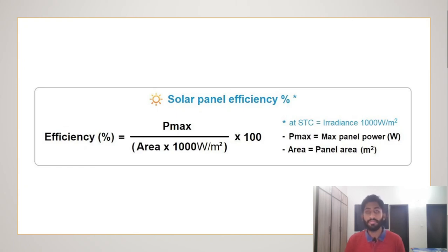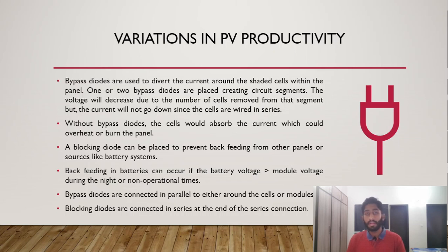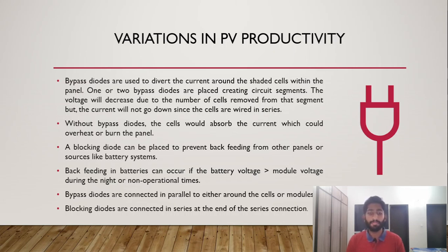When PV modules in series are shaded, voltage decreases and the current tries to absorb that shaded region, which can overheat or burn the module. To prevent this, bypass diodes are connected in parallel — typically two or three per module — creating alternate circuit segments. This allows voltage to drop in the shaded section while keeping current flowing safely through alternate routes, preventing overheating or damage.